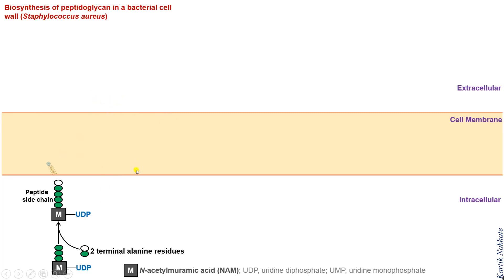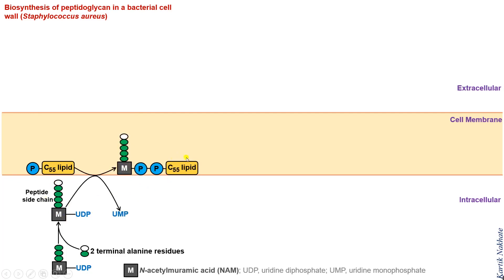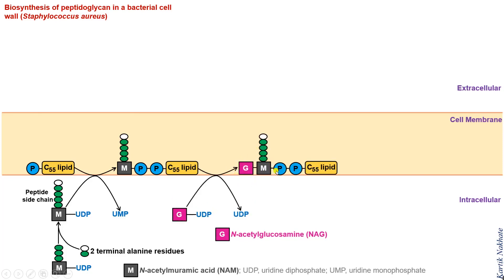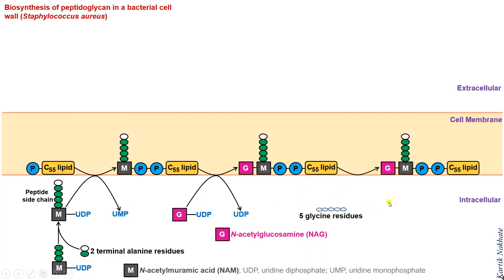However, this is achieved by linking them to a very large lipid carrier with 55 carbon atoms, which can transport hydrophilic units across the cell membrane. First of all, the N-acetyl muramic acid attached to UDP and pentapeptide is transferred to a C55 lipid carrier in the cell membrane with the release of UMP. This is followed by a merger of UDP-N-acetyl glucosamine to form a disaccharide pentapeptide complex linked to the C55 carrier. At this stage, the 5 glycine residues are also attached to the peptide side chain.